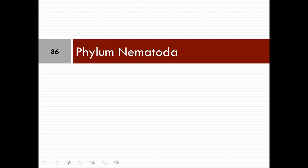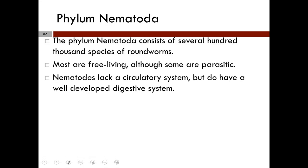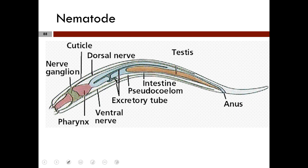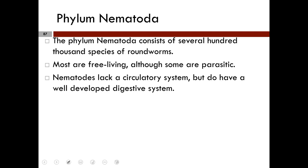Next up is Phylum Nemertea — the ribbon worms. There are approximately 1,200 species. Many nemerteans are predators that feed on crustaceans or even annelids. Most are free-living with a few being parasitic. Nemerteans lack a circulatory system; however, upon dissection, you will see a very well-developed digestive system. Blood is circulated by contractions of muscular blood vessels and by moving the body.